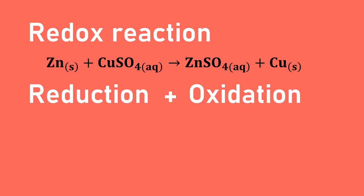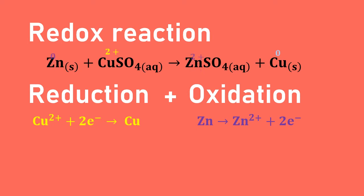As an example of a redox reaction, zinc reacts with copper sulfate to produce zinc sulfate and solid copper. The reduction reaction shows copper ions receiving electrons to form copper metal — the oxidation number decreases from +2 to 0. The oxidation reaction shows zinc losing electrons to produce zinc²⁺ ions — the oxidation number increases from 0 to +2.